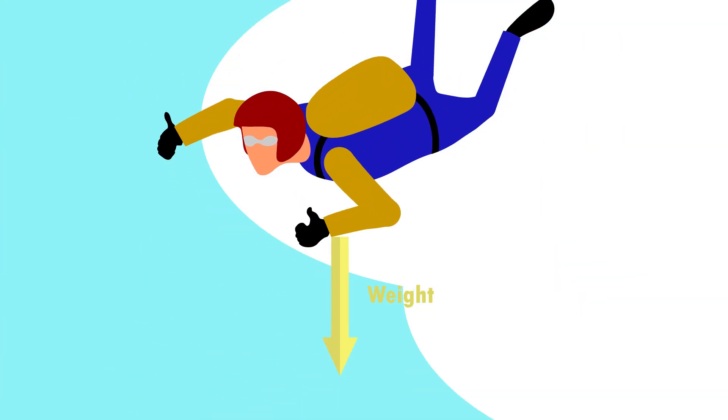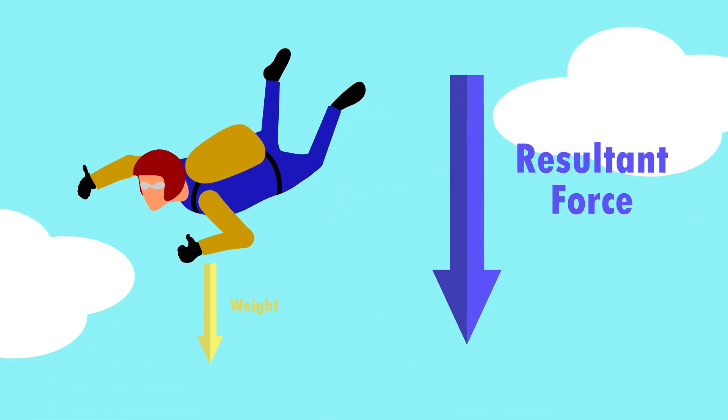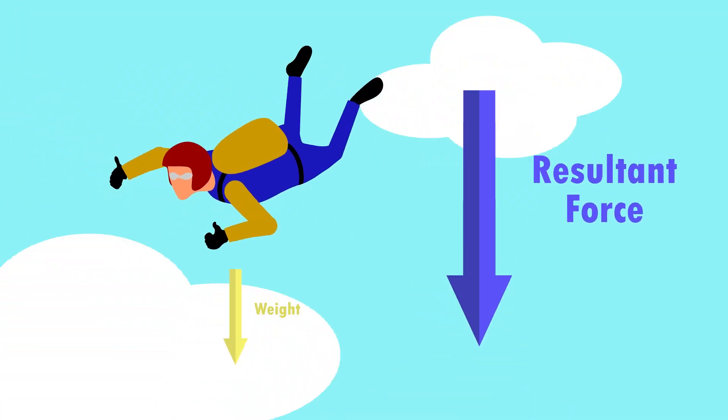Let's look at another very common example, a skydiver. So when the skydiver falls out of the airplane, the only force acting on them is their weight, shown here by the yellow arrow. So the forces are unbalanced. There is a resultant force, which we've now shown by a blue arrow, and they start to accelerate downwards.